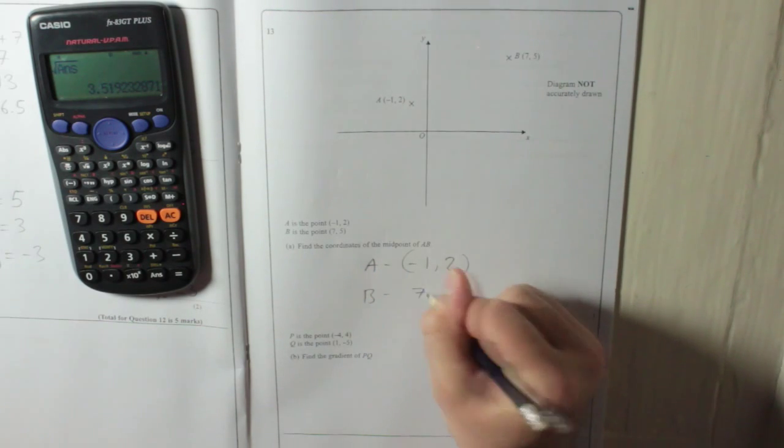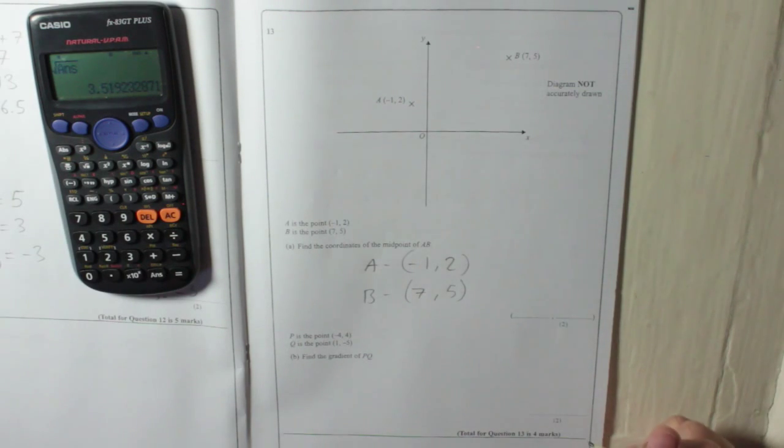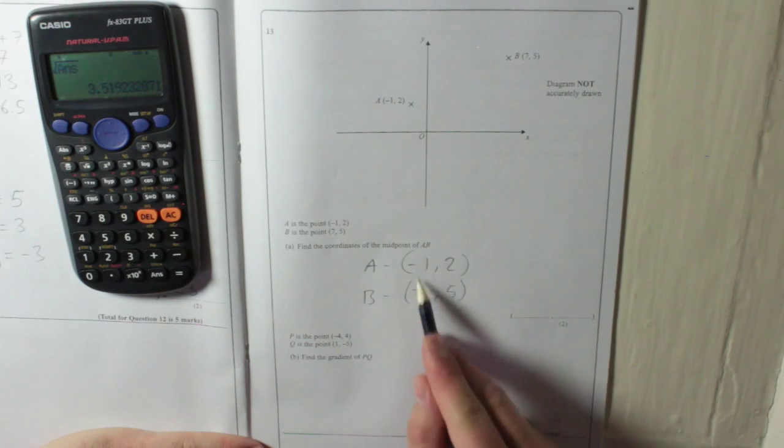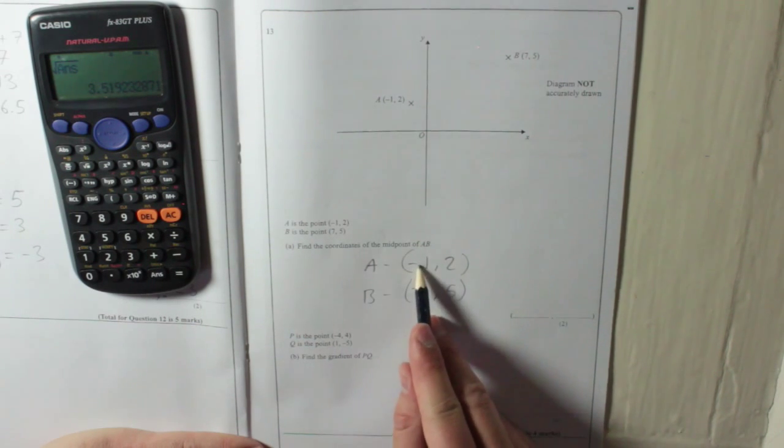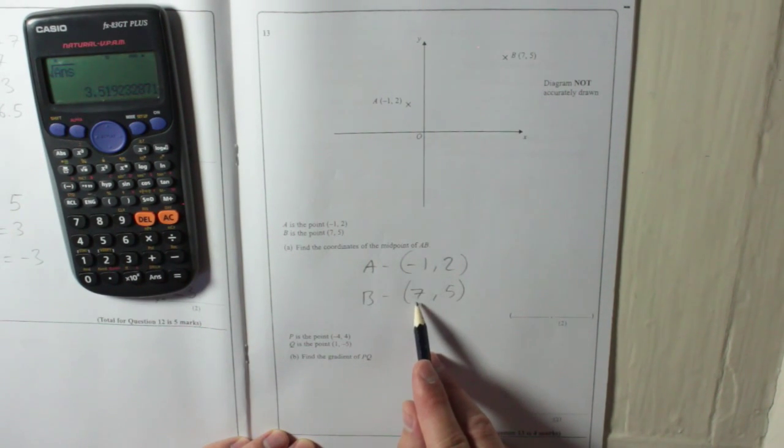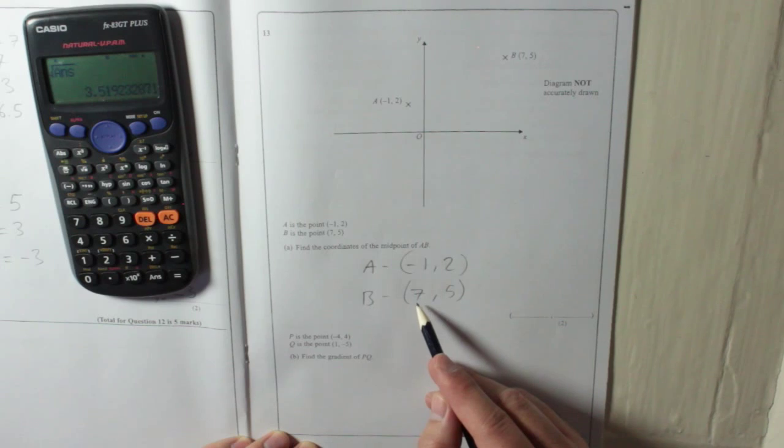B is at 7, 5. Now what we need to do is get the points in between each one. Remember, that's where you are on the x-axis. It moves from minus 1 on the x-axis to B, which is at 7 on the x-axis. You might be able to tell it's 8. From minus 1 to 7, it's 8. So halfway is going to be adding 4, which gives you 3.